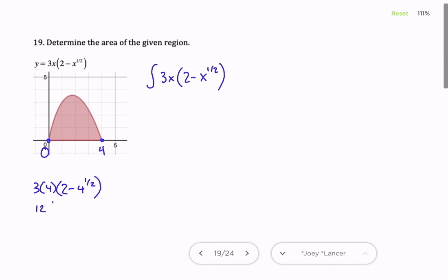So we would have 12 times 2 minus the square root of 4, which is 2, and yeah, that does give us 0. So we know this is going to go from 0 to 4.